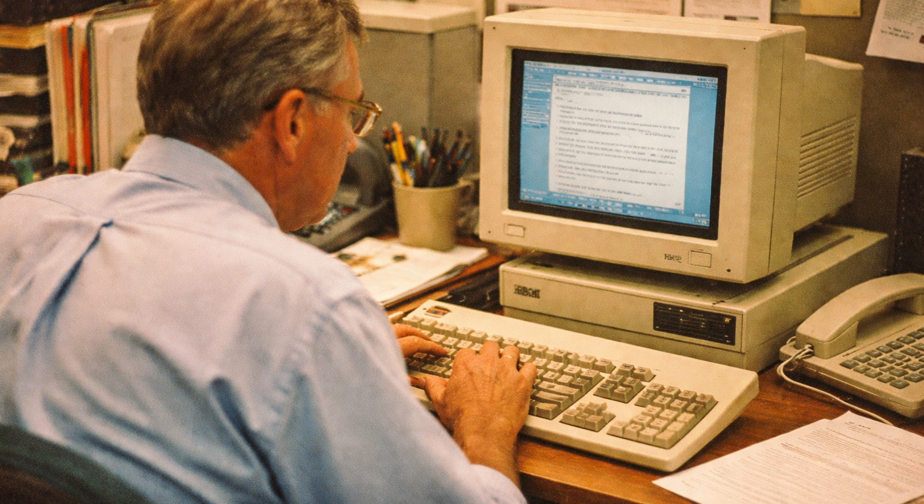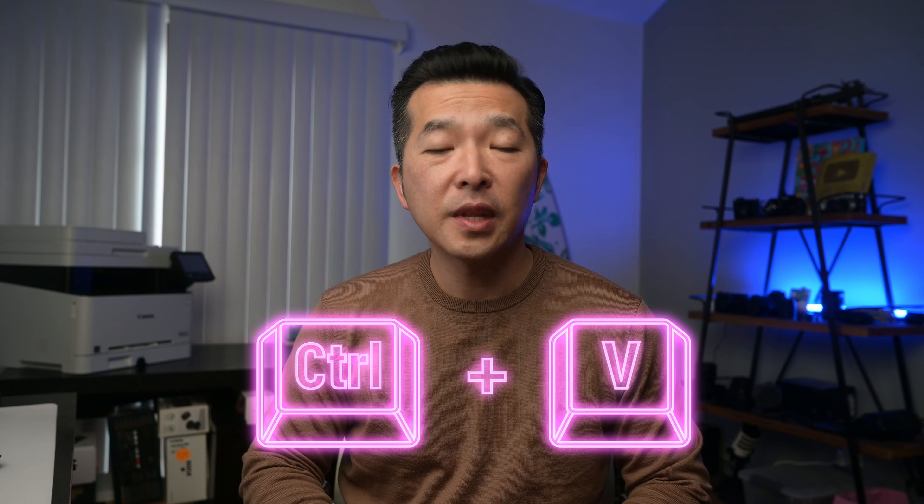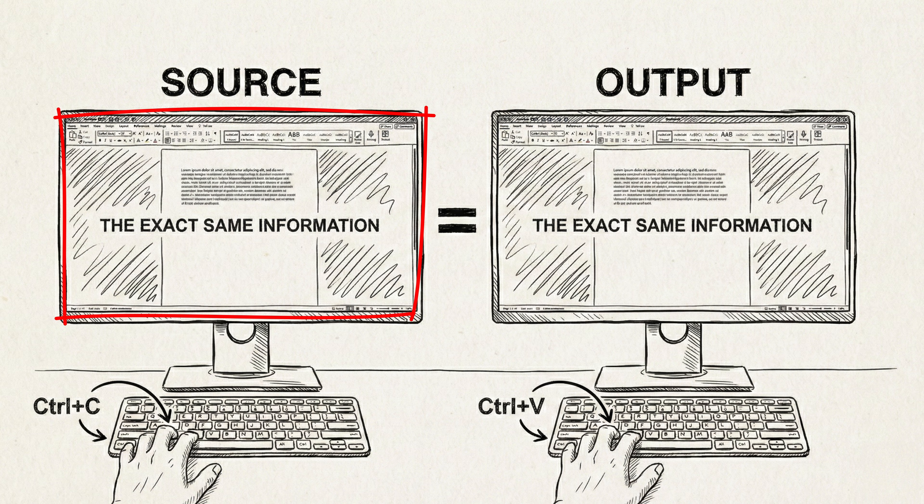We've been using copy and paste the same way for 30 years. You find something, you press Ctrl-C, you go somewhere else, and you press Ctrl-V. It works, but it's dumb. It's got zero brain power, meaning the input and the output are the same, except sometimes the formatting gets jumbled.